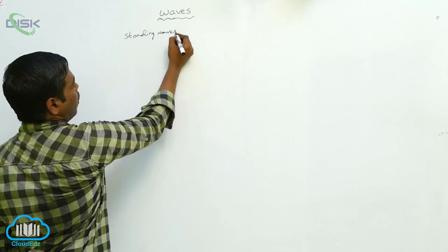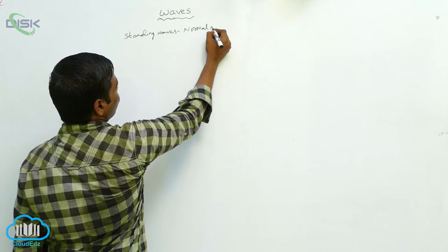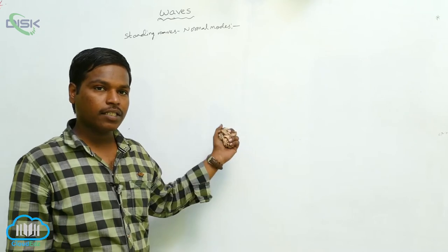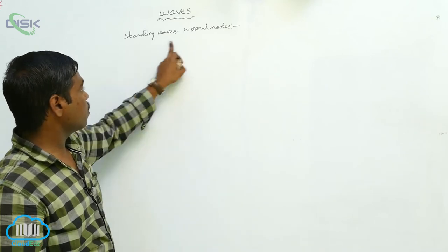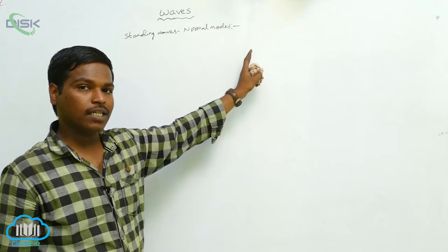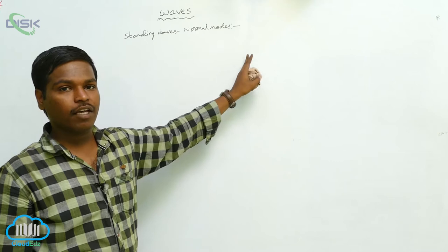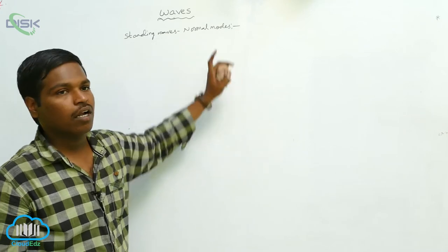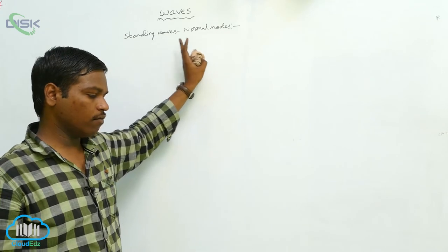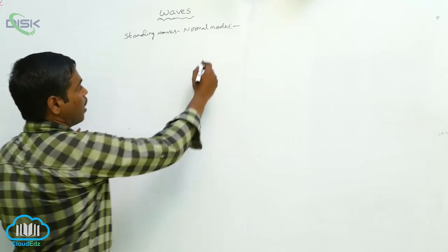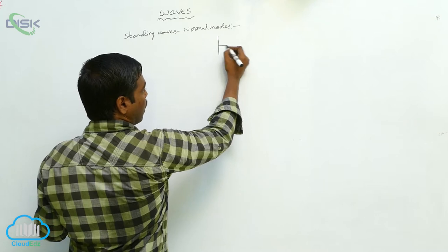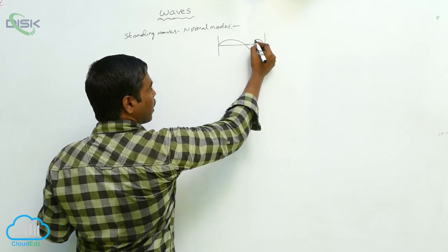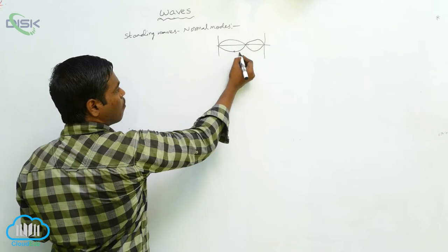Standing waves under normal modes in a string. Here, a wave is travelling along one direction in a string, and after reaching the end, the wave travels back in the opposite direction. When a wave travels in one direction and then reflects back in the opposite direction after reaching the end, we get standing waves, also called stationary waves.